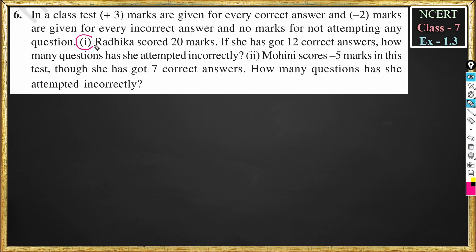In problem 1, Radhika scored 20 marks. If she got 12 correct answers, how many questions has she attempted incorrectly? Total marks Radhika scored is 20, with 12 correct answers. We need to find how many questions she attempted incorrectly.